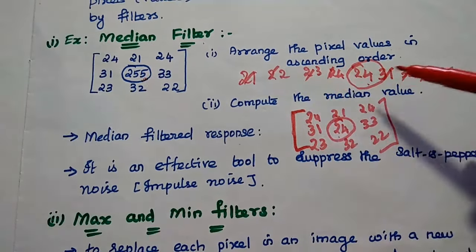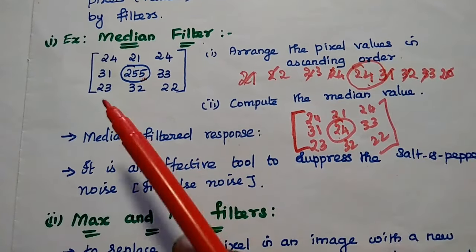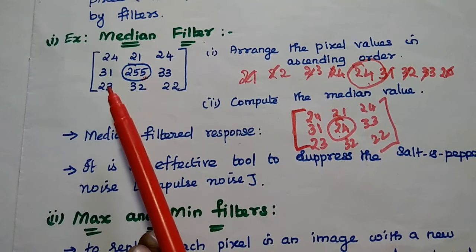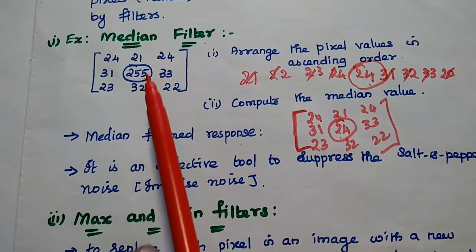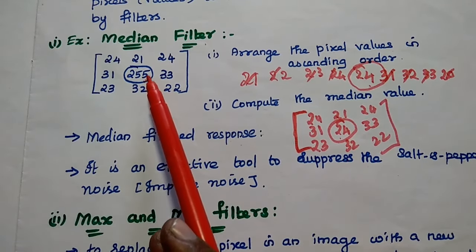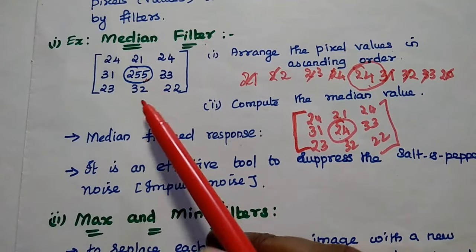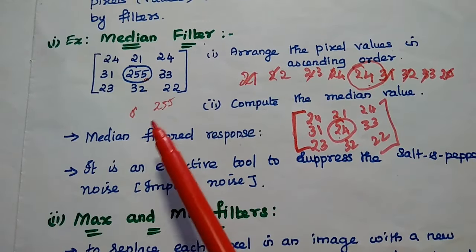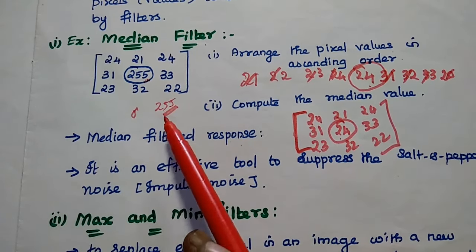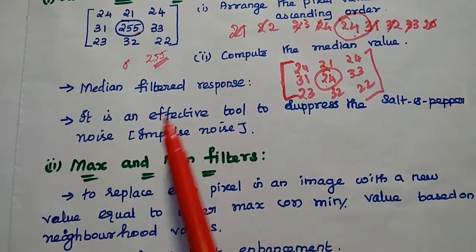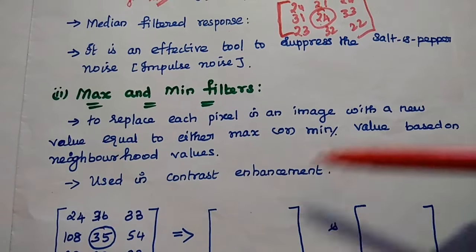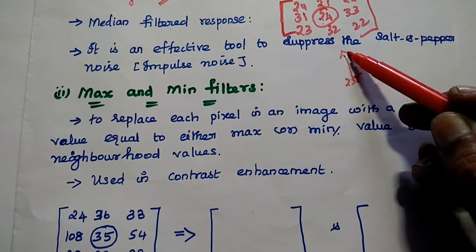Non-linear means it is based on order or ranking. From this segment, we can observe that there is noise present. All the pixel values are roughly in the range of 20 to 35, except for 255. In a gray level image, 0 is black and 255 is white. This kind of noise — where 255 appears as a bright outlier — is known as salt noise, and this type is called salt and pepper noise. The median filter is an effective tool to suppress salt and pepper noise, also known as impulse noise, because 255 is a very high pixel value.